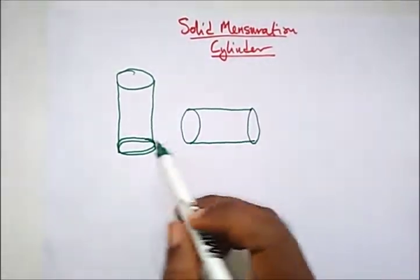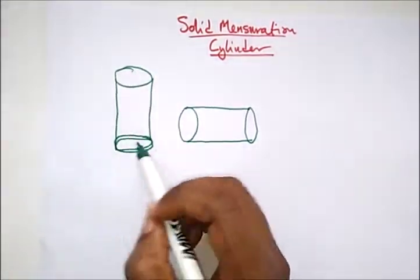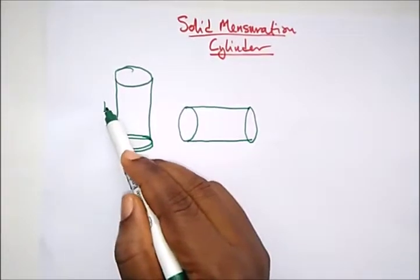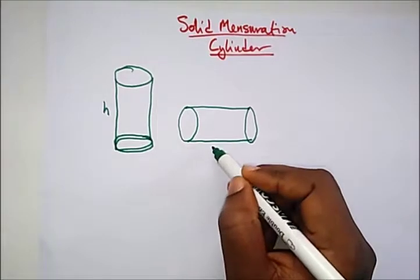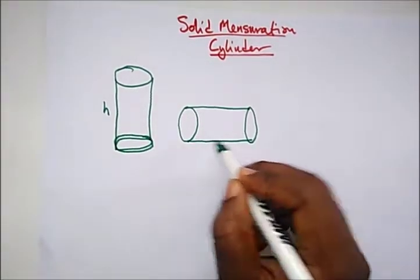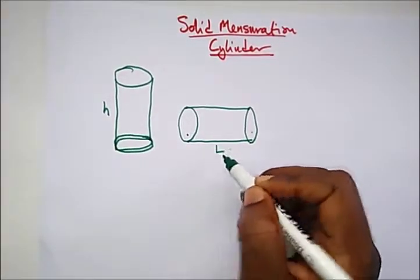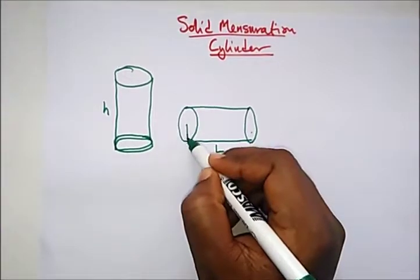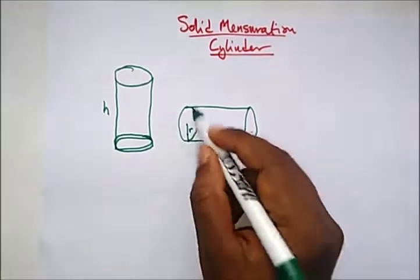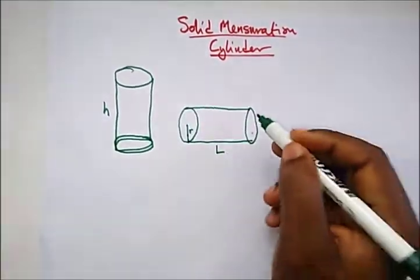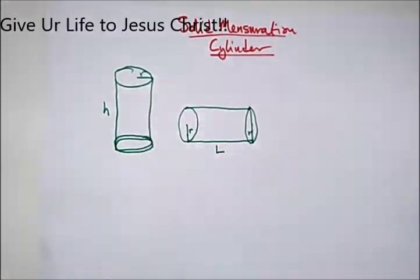When you have a cylinder standing vertical like this, the height is known as h. When you have a cylinder which is horizontal, the distance from one bottom to another is known as length. The radius here is r. The diameter is the full length of the bottom circle from here to here. Half of it is the radius.